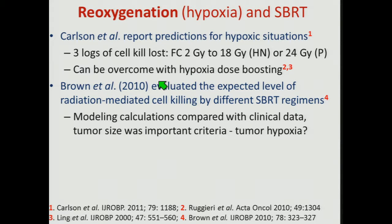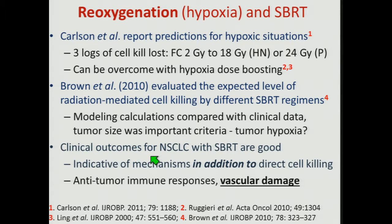Martin Brown's group demonstrated that the expected level of cell killing for radiation-mediated killing is different for different SBRT regimens. From modeling calculations compared with non-small cell lung cancer studies at Stanford, there was a divergence in the modeling from the clinical outcomes. They suggested that tumor size in their clinical data was very significant, and as tumor size was significant, they related tumor size to the amount of tumor hypoxia. This modeling association with clinical data indicated tumor hypoxia is an important factor following SBRT. If there's some miscalculation, then maybe there are other factors in addition to direct cell killing — such as immune responses and vascular damage.